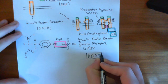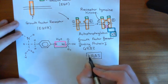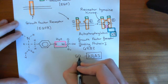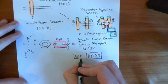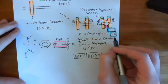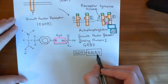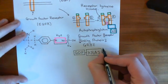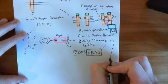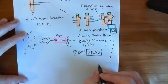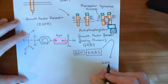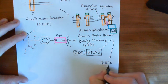G-proteins are effectively the on and off switches. They can have an off state where they are bound to GDP, and then they have an on state when they're bound to GTP. Basically, the role of SOS, when it has been activated, is to turn on the monomeric G-protein that is KRAS. So it's going to take the KRAS, break off that GDP, grab a GTP molecule from the cytoplasm, and bind a GTP molecule onto the KRAS protein.